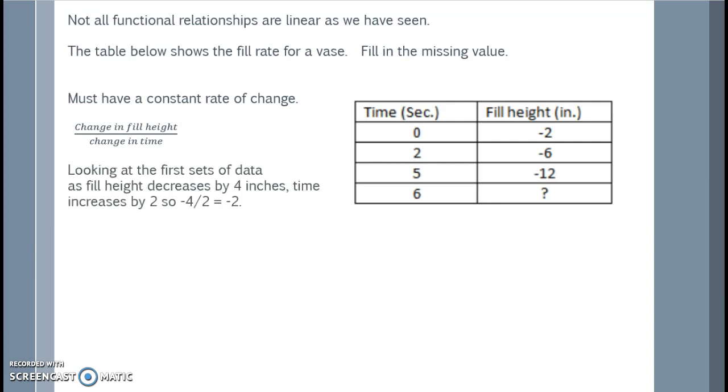Looking at the first sets of data, as fill height decreases by 4 inches, time is increasing by 2. So negative 4 divided by 2 is negative 2.